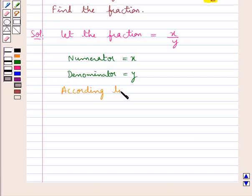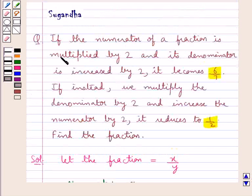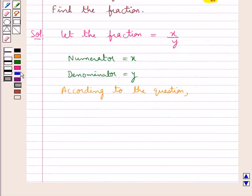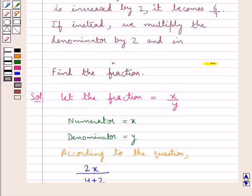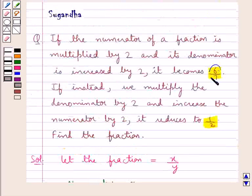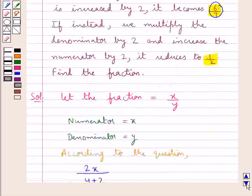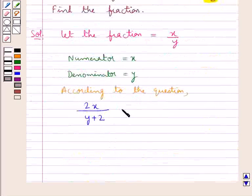According to the first condition, if the numerator is multiplied by 2 and the denominator is increased by 2, we have the numerator as 2x and the denominator as y plus 2, and then the fraction becomes 6 upon 7. So 2x upon y plus 2 is equal to 6 upon 7.